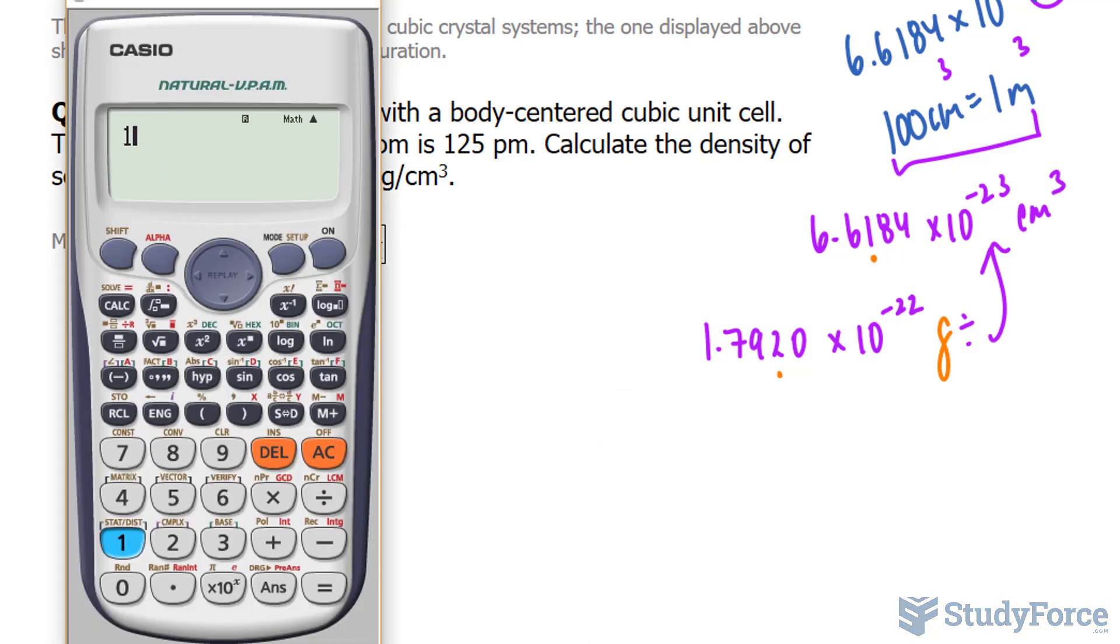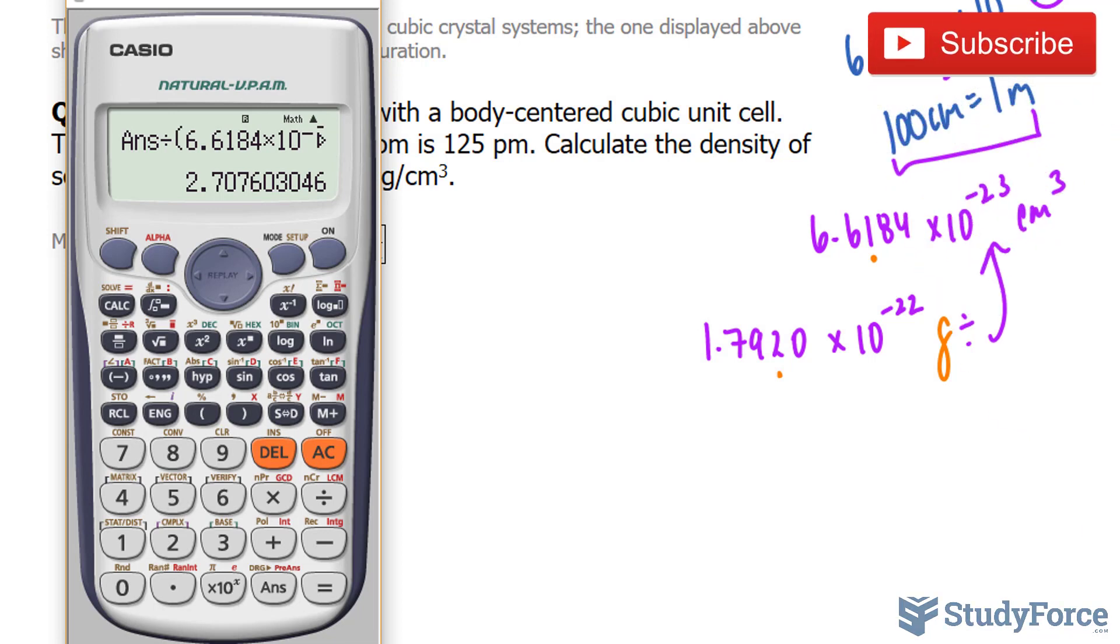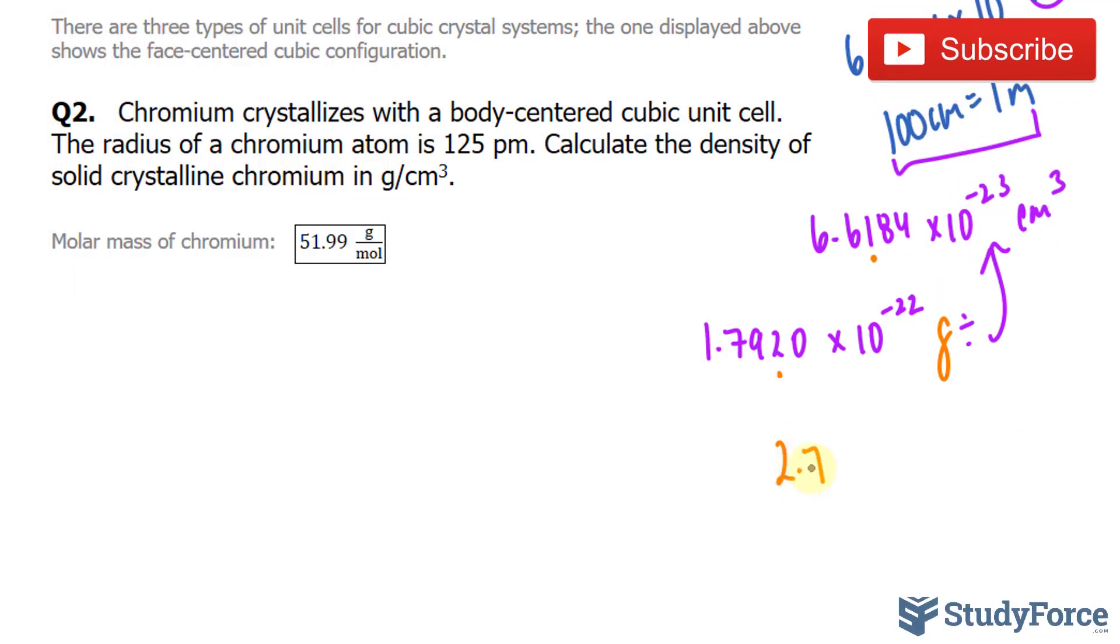Using our calculator, 1.7920 times 10 to the power of negative 22 divided by 6.6184 times 10 to the power of negative 23 gives us our density as 2.71 grams per centimeters cubed.